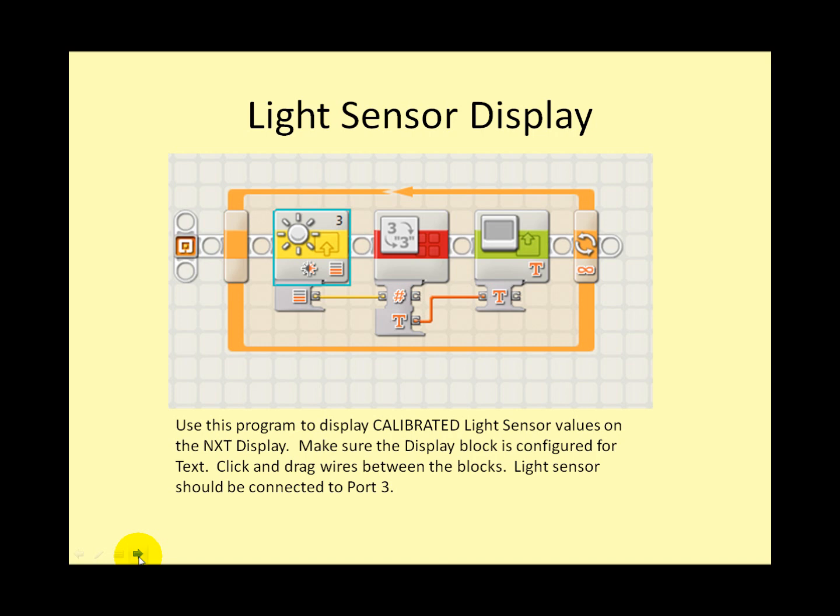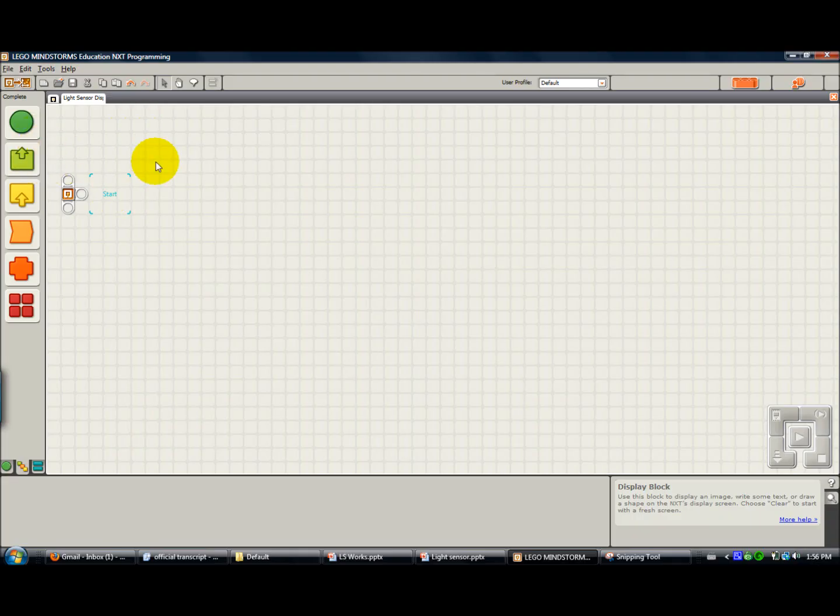Here is the program I mentioned earlier. This program will display the light sensor readings on the NXT's display. These are calibrated values which are the ones your program will use. I'm going to show you how to build this program.